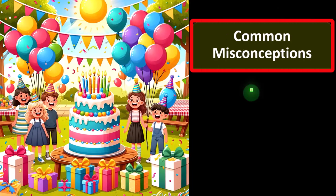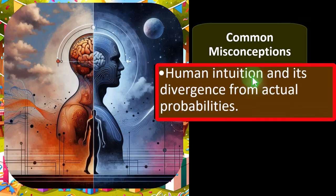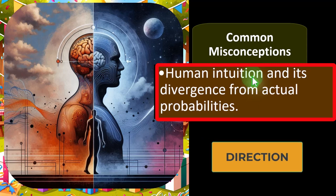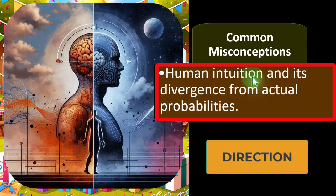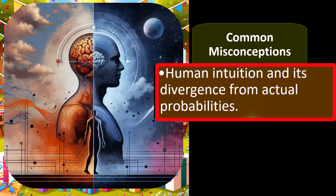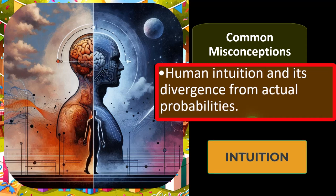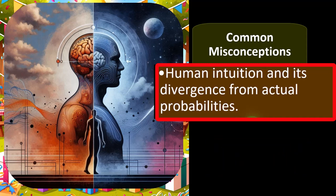One reason it's useful to understand concepts related to probability is that although our intuition is typically quite good at leading us in the correct direction, it can be consistently fooled by some probability concepts. We want to identify those decisions where our gut might not lead us correctly, and put together more formal decision-making processes for them. Many magic tricks, for example, take advantage of this.